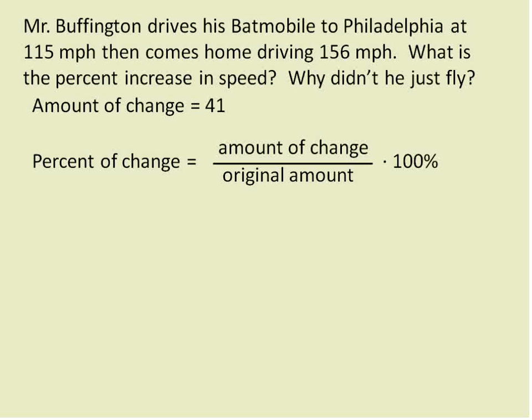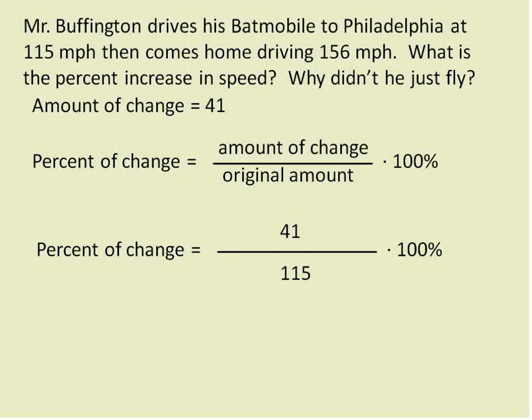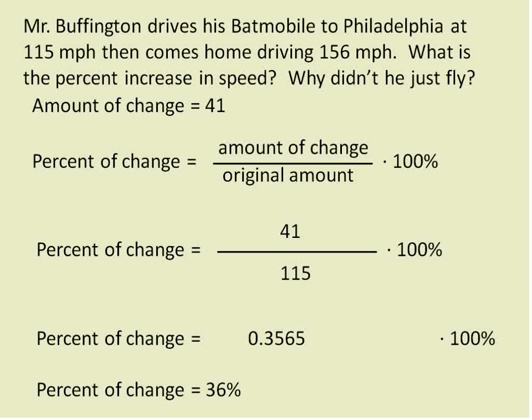We substitute that into our percent of change equation. The amount of change is 41, and the original speed was 115, so that goes on the bottom. 41 divided by 115 gives us 0.3565. Multiplying times 100 — shifting the decimal two places — gives us 35.65%. Rounding to the nearest percent, the percent of change is 36%. I was going 36% faster on the way home.